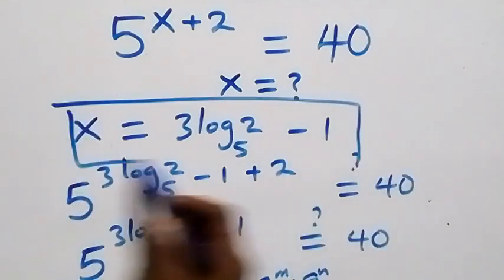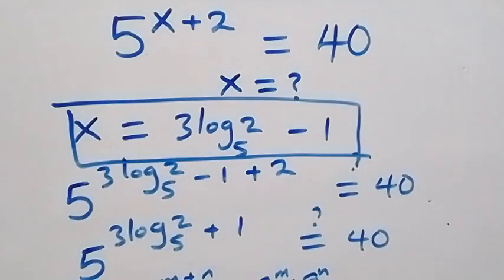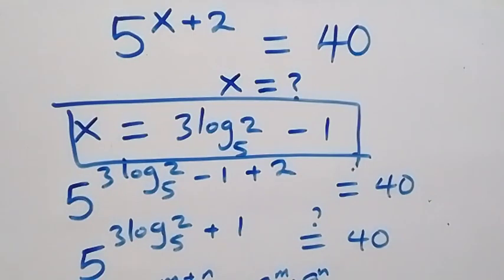Hence we conclude that x equals 3 log₅2 minus 1 satisfies the given equation. Thank you for watching — don't forget to subscribe to Master T-Math Class, turn on your notification bell, share this video, put your comments, and join our membership package. See you next class, bye for now.